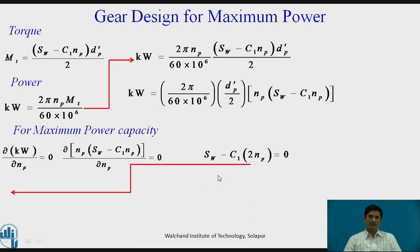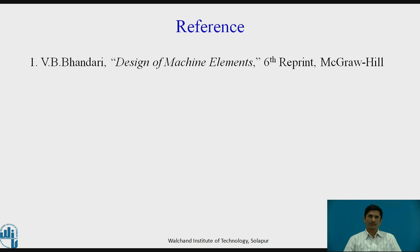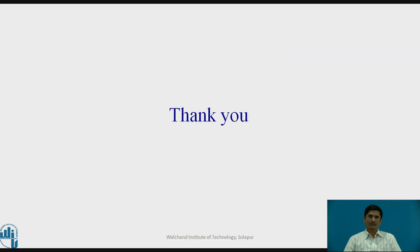If I rearrange the terms, SW minus 2 PD equals 0. If I simplify and rearrange the terms, SW equals 2 PD. In other words, PT equals PD equals SW by 2. This is the condition for maximum power transmission by a spur gear pair. Thank you.